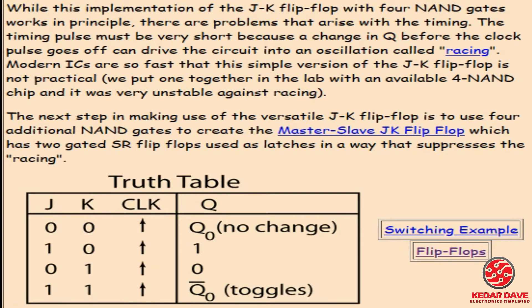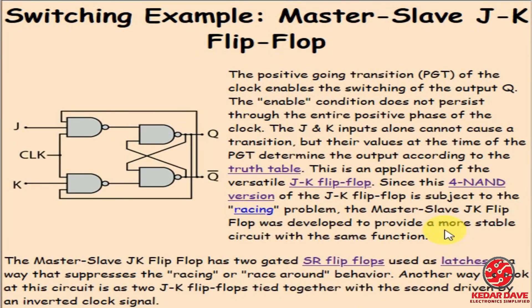Let's understand the switching of the JK flip-flop and look at an example with the master-slave configuration. In this condition, a positive-going transition of the clock enables the switching. If the clock has a positive edge or positive level, then the flip-flop will enable the switch; otherwise it will not be enabled. The J and K inputs alone cannot cause a transition without the clock pulse.